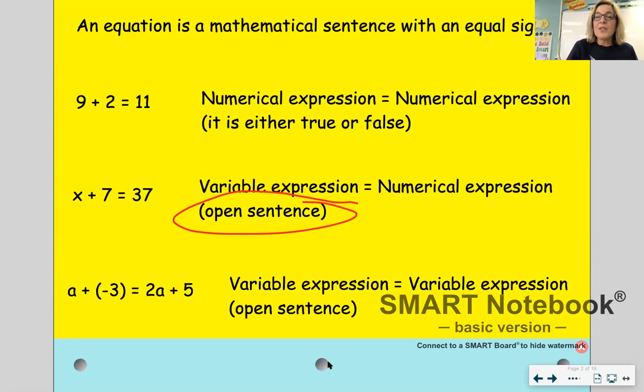And then there's the type of equation where you can have a variable expression equal to another variable expression. And we call this an open sentence because it contains variables.